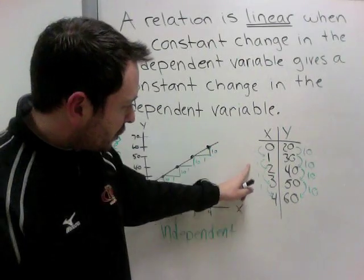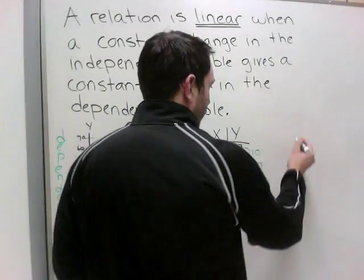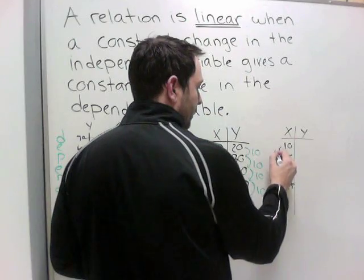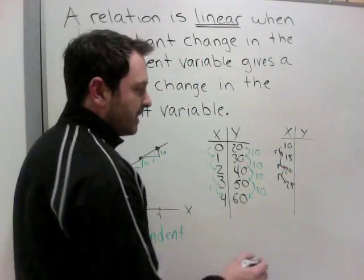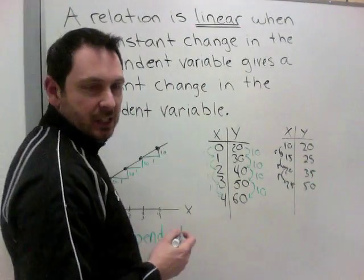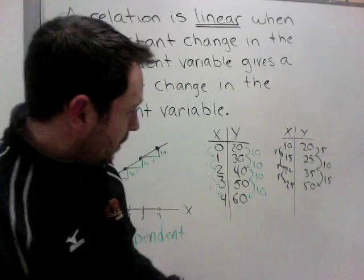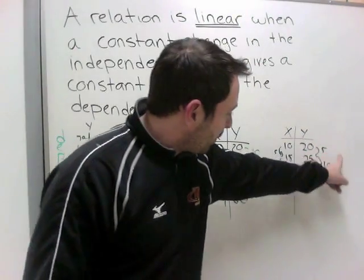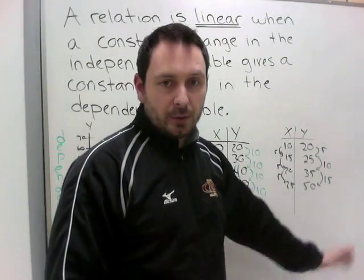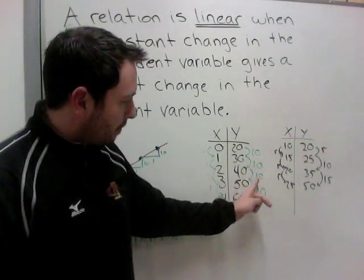For a non-linear example: if x went 10, 15, 20, 25 — going up 5 each time — but y went 20, 25, 35, 50 — going up 5, then 10, then 15 — we do have a constant change in the independent, but the dependent is not constant. It went up 5, then 10, then 15. It needs to be the exact same each time. So this would be a non-linear relation. To summarize: straight line on a graph means linear; if both sides of a table are constant, it is linear.